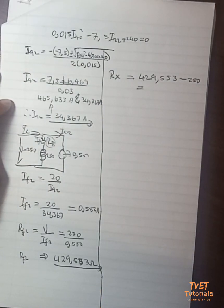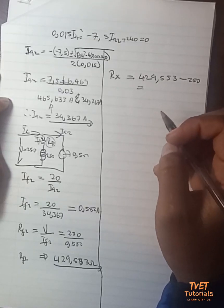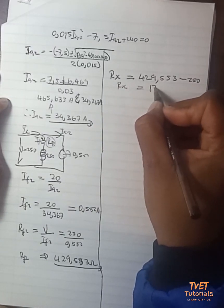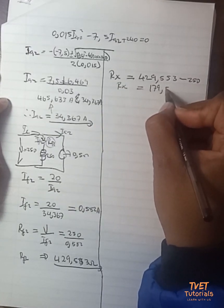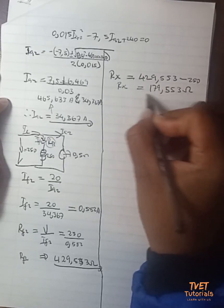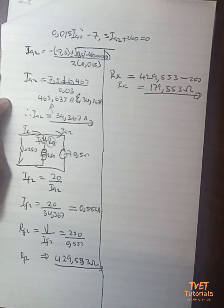You will end up at R_x is equal to 179.553 ohms. This is the value that we were looking for. Thank you.